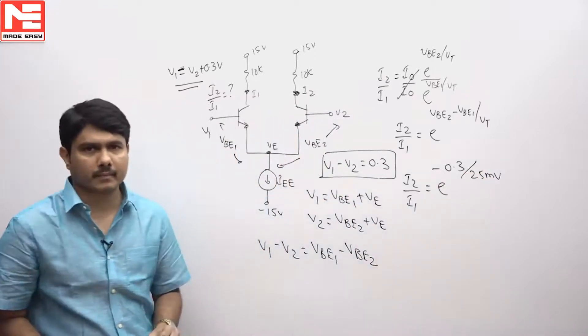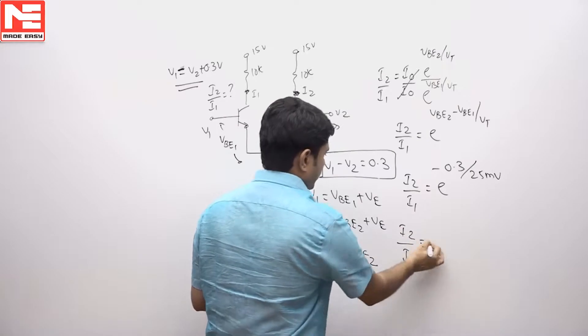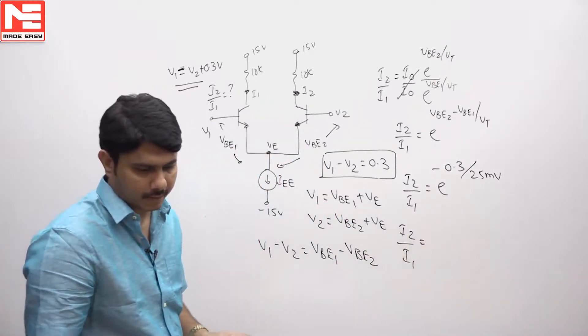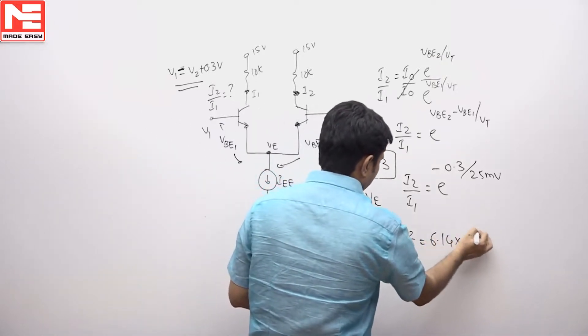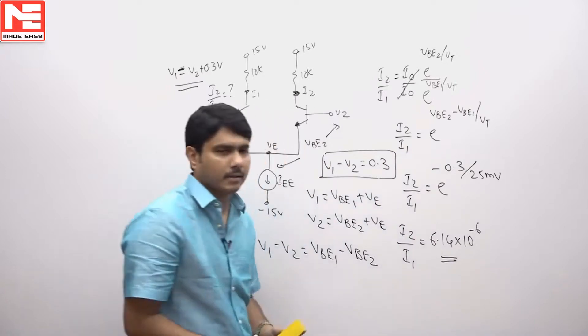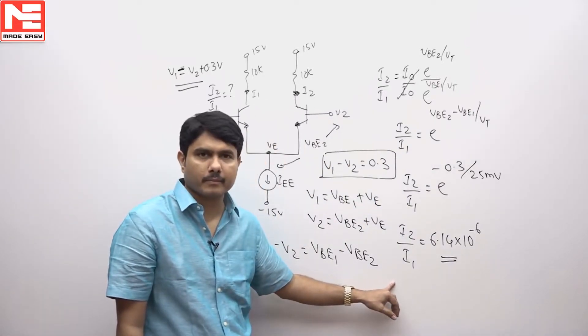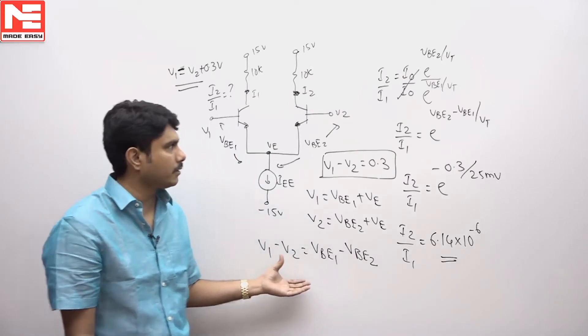If you solve this problem, exponential value, I2 by I1, the answer is coming nearly around a decimal value. It comes around 6.14 times 10 power minus 6. This must be the correct answer, 6.14 times 10 power minus 6. So this is the design value.